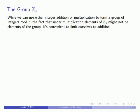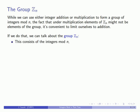So if we want to talk about the group of integers mod n, it's convenient to start with the operation of addition only, and then we can talk about the group Z_n. This group will consist of the integers mod n where the operation that we'll be using is the operation of integer addition.